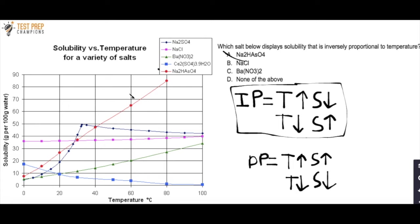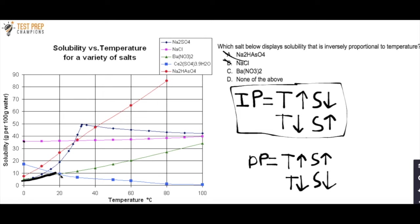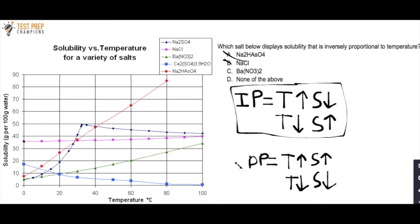NaCl is the pink line. Tracing it from left to right, it increases slowly and steadily — a very gradual climb. As temperature increases, solubility also increases, so NaCl is also directly proportional. For C, BaNO3)2 is the green line, and it increases the entire time as well. As temperature increases, solubility increases. So that's also not inversely proportional.